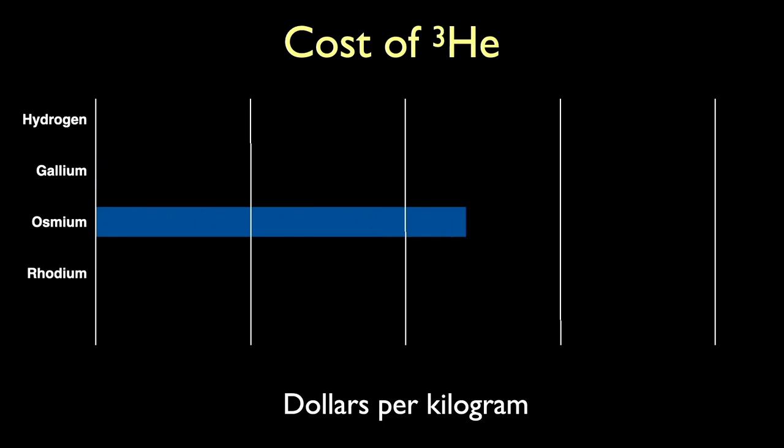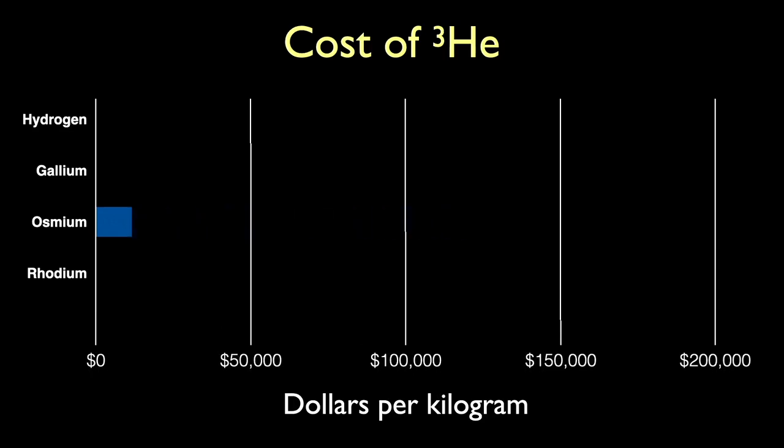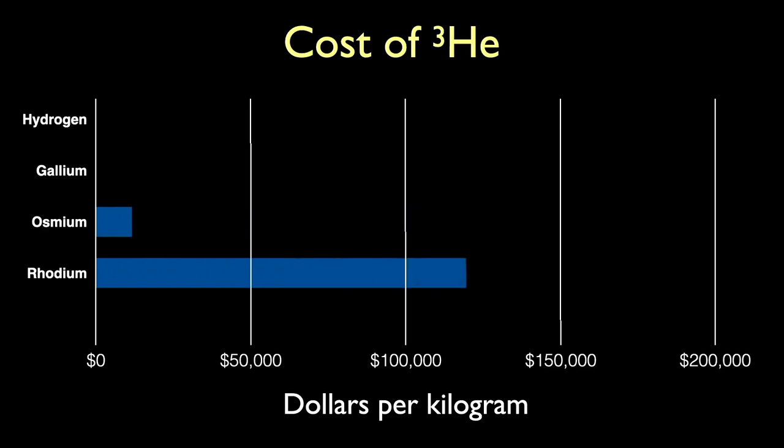Now we're getting into some really expensive stuff when we add rhodium. We have to multiply our chart range again by a factor of 10. Hydrogen and gallium have disappeared. Osmium becomes one-tenth the size and we can now see that rhodium is a mere $147,000 per kilogram.